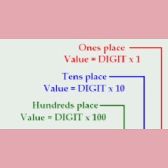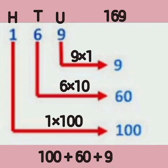Let's see an example. In the number 169, 9 is in the unit's place, so 9 into 1 is equal to 9. 6 is in the 10's place, so 6 into 10 is equal to 60. And 1 is in the 100's place, so 1 into 100 is equal to 100. So the expanded form of the number 169 is 100 plus 60 plus 9.